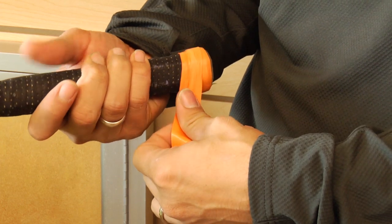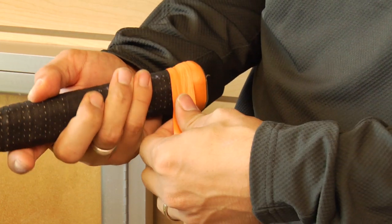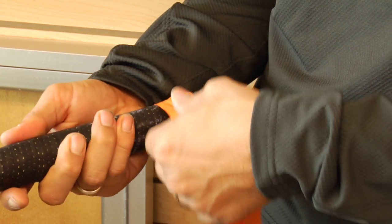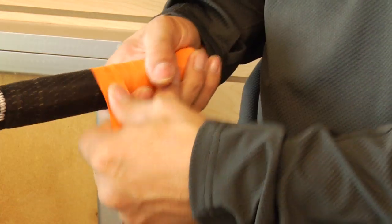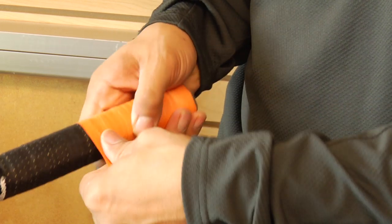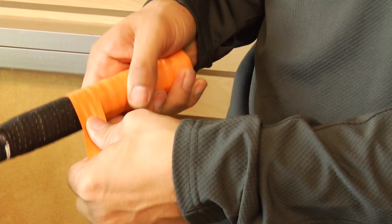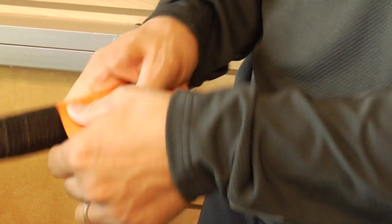As you're twisting your racket, you're just kind of wrapping the tape around it. The starting out is the slowest part. Once you start to get to the middle of your racket handle, it starts to speed up a little bit.